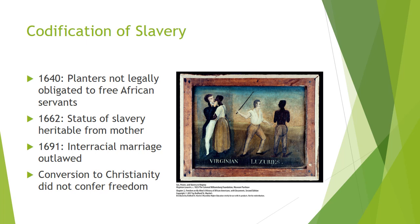Other laws show that black people had begun to acquire an inferior status in the colonies. A 1643 law charged African women a labor tax. A 1662 law made black women's status inheritable, decreeing that all children born in this country shall be held bond or free only according to the condition of the mother.